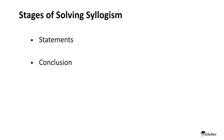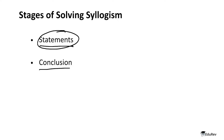Now there are stages of solving syllogisms. The first one is statements and the second is conclusions. In this particular video, we are going to study only about the statements. Syllogisms can be solved in a number of ways, but the method that we are going to use is Venn diagrams. So we are going to focus on Venn diagrams.